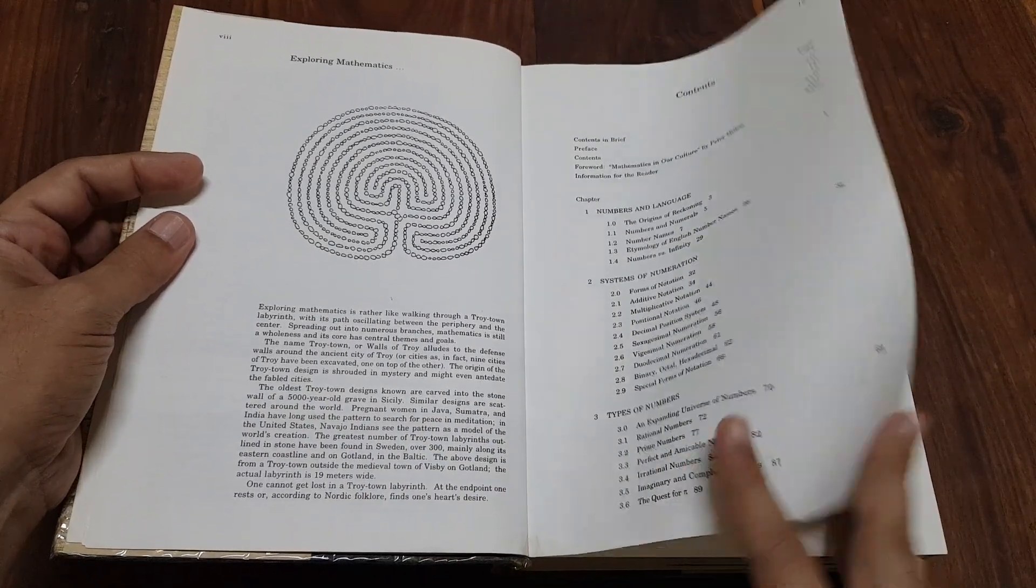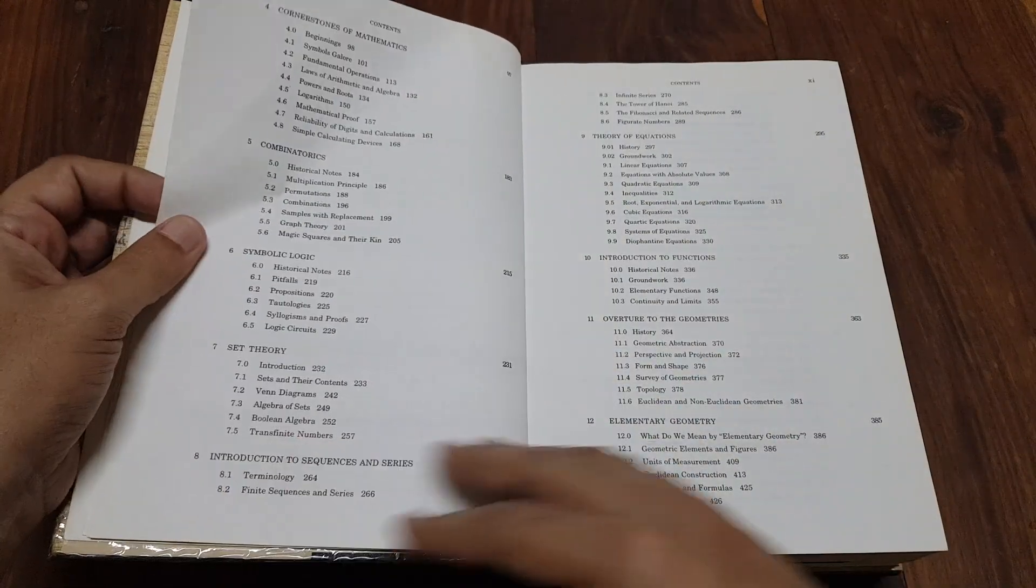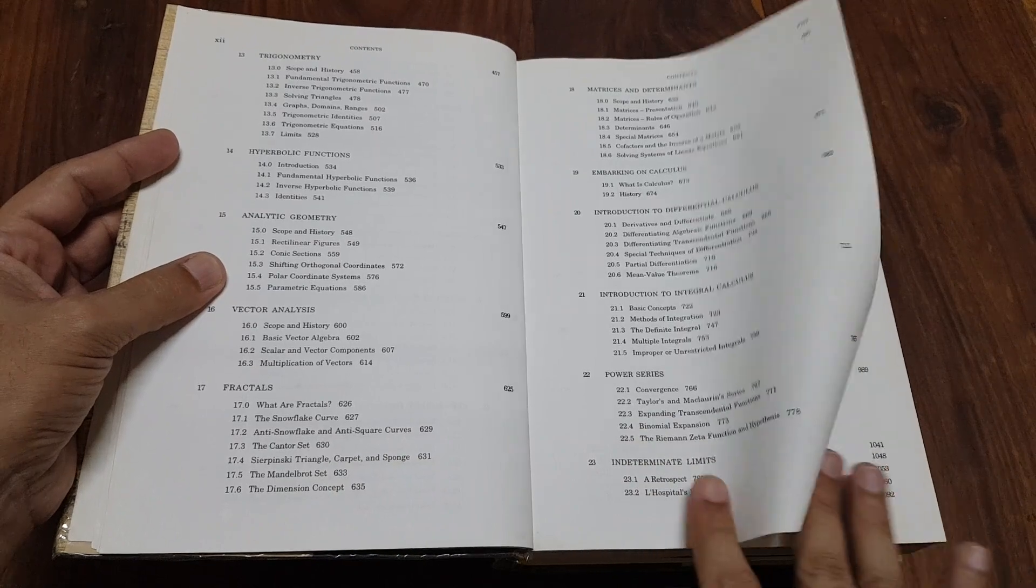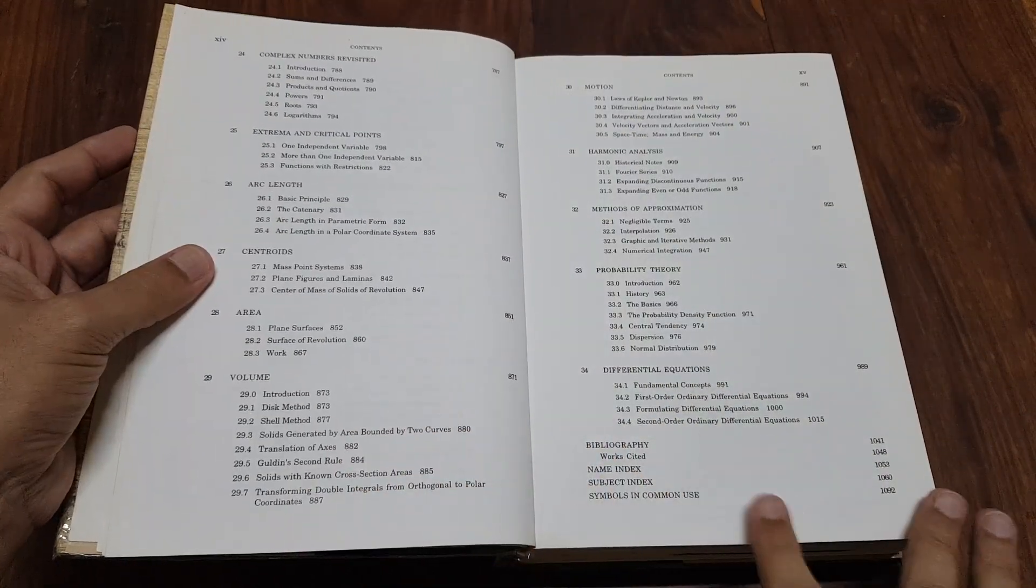Jan Gullberg was a Swedish physician and a mathematics enthusiast. His passion for the subject shines through in his clear and enthusiastic presentation of mathematical ideas.